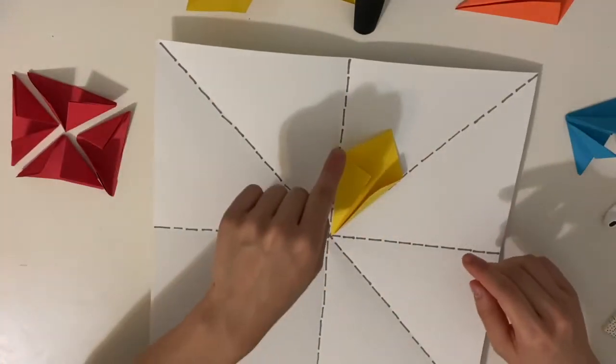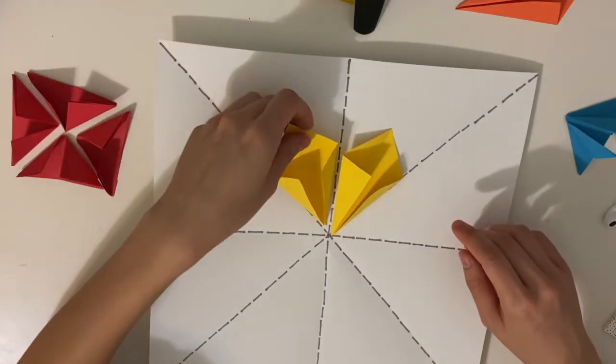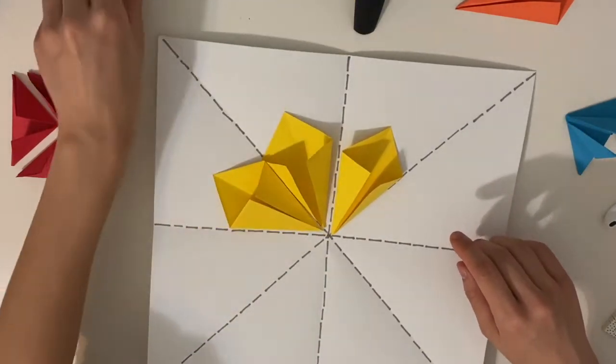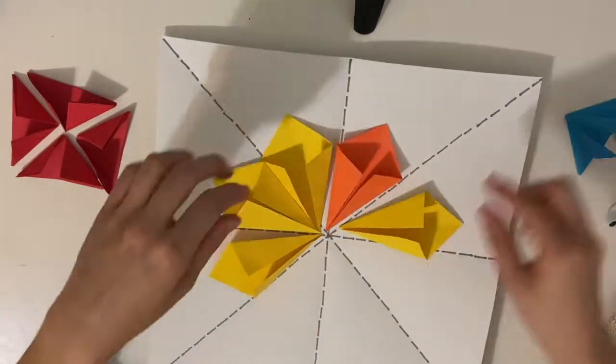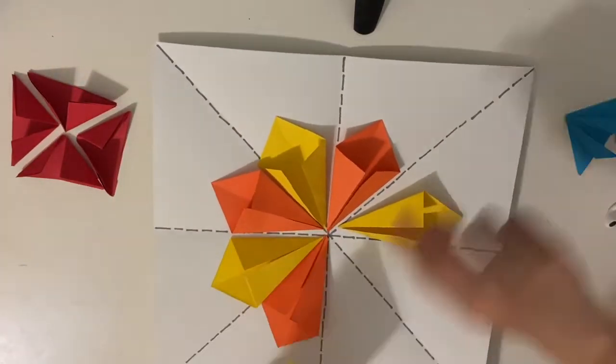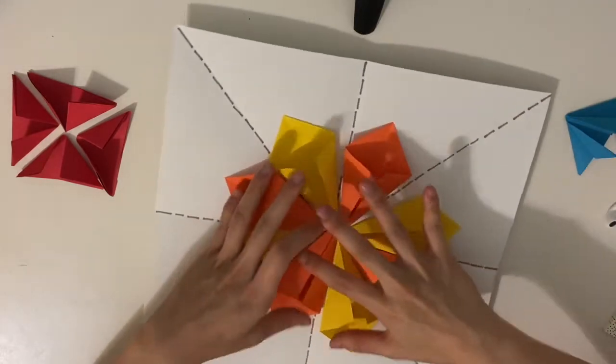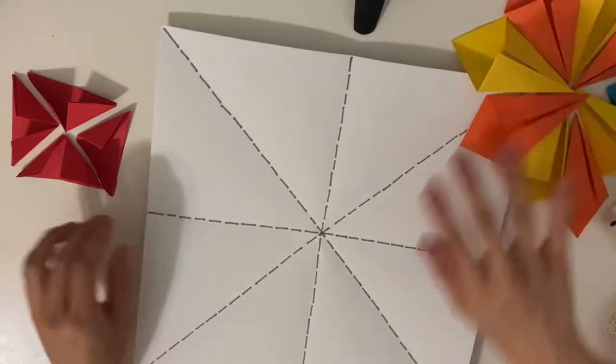Kite folds take up one triangle, so we'll need eight to fill in each of the eight triangles on here. You could do it in a pattern of colors. Maybe you want to do a combination of them.